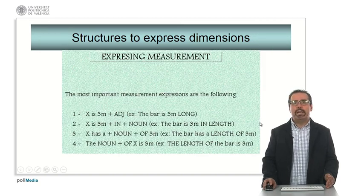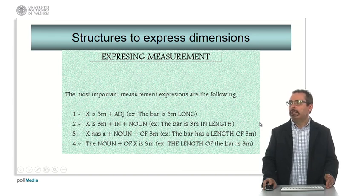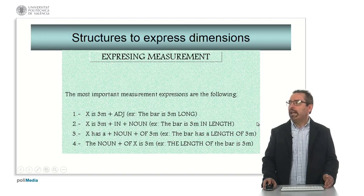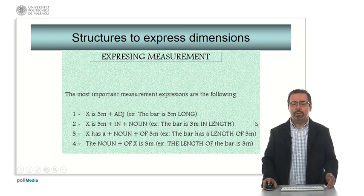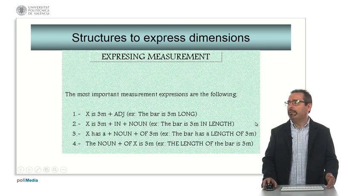And in order to express exact dimensions in English, we have these four possibilities. We can use the adjective with no preposition. The bar is three meters long, no preposition. The second example, to use the dimension noun. In this case, we must use the preposition in. The bar is three meters in length. And examples three and four are very similar. The bar has a length of three meters, or the length of the bar is three meters.